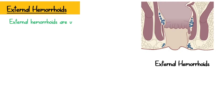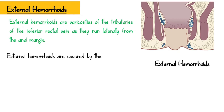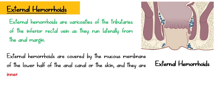External hemorrhoids are varicosities of the tributaries of the inferior rectal vein, arising laterally from the anal margin. They are covered by skin and are commonly associated with well-established internal hemorrhoids. External hemorrhoids are covered by the mucous membrane of the lower half of the anal canal or by skin.